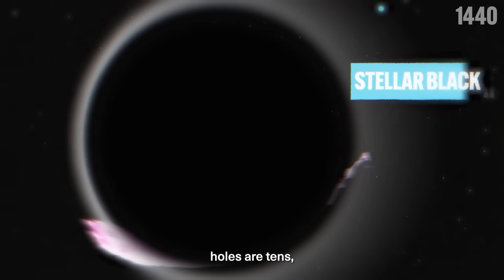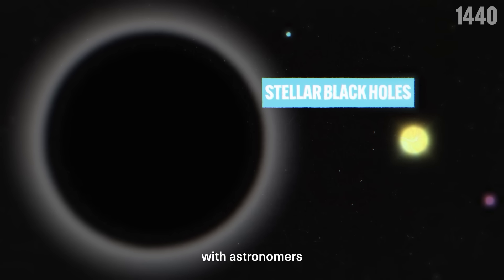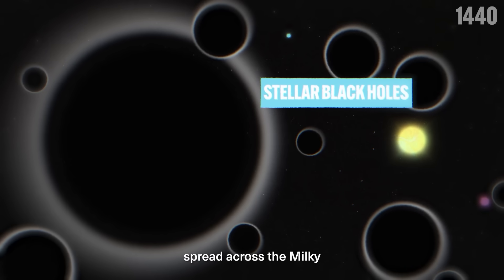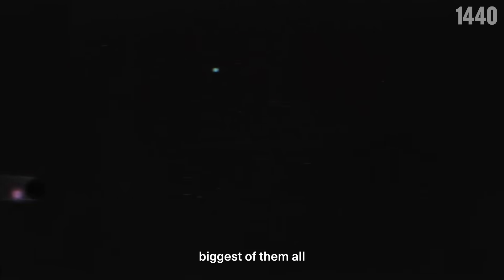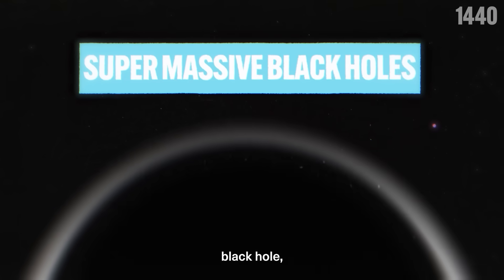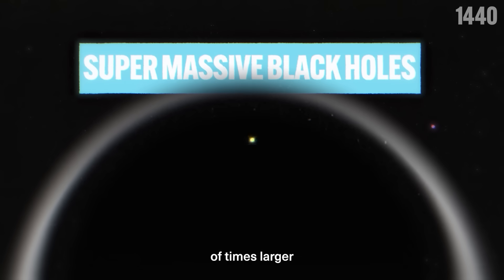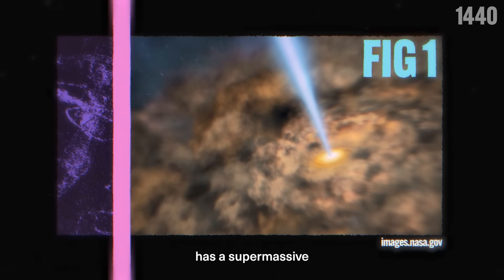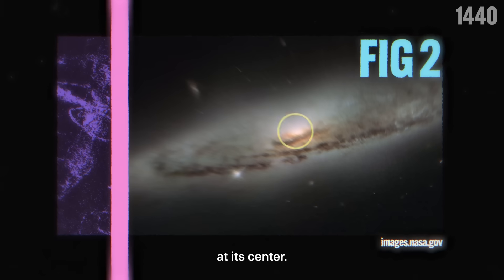Stellar black holes are tens if not hundreds times the mass of our sun, with astronomers believing there are over 100 million of them spread across the Milky Way alone. Then we have the biggest of them all, the supermassive black hole, which is millions if not billions of times larger than the sun. It's even been theorized that every large galaxy in the universe has a supermassive black hole at its center.